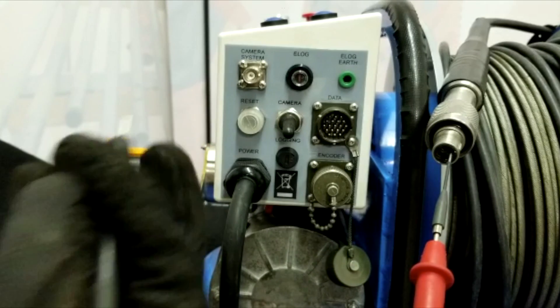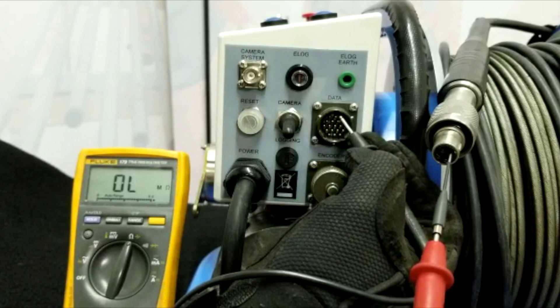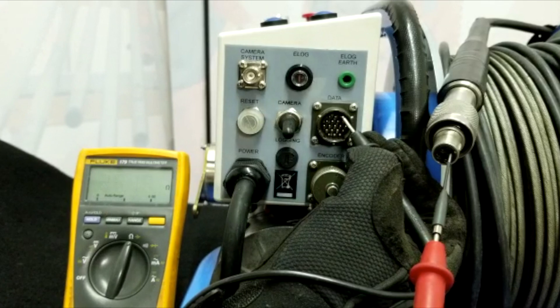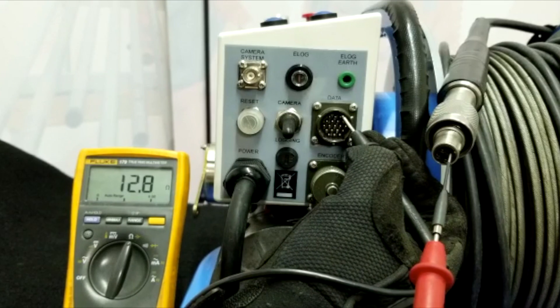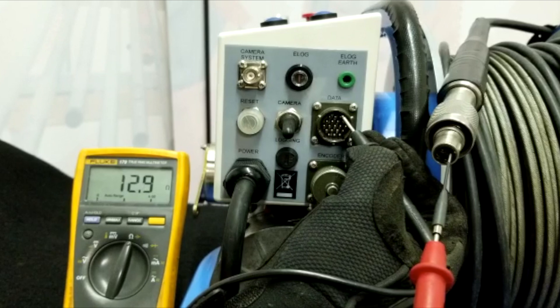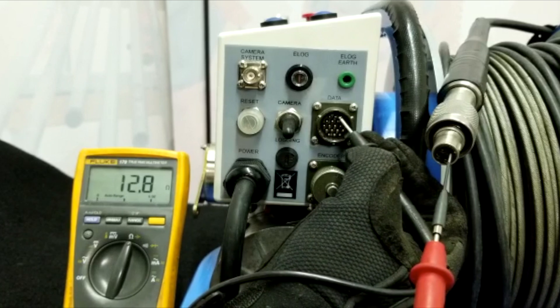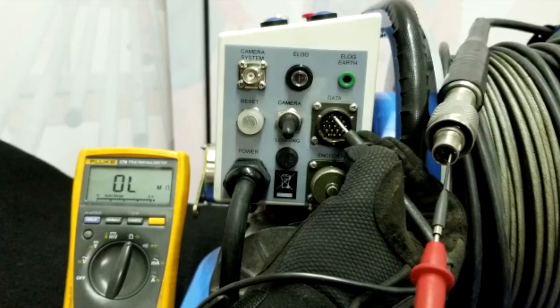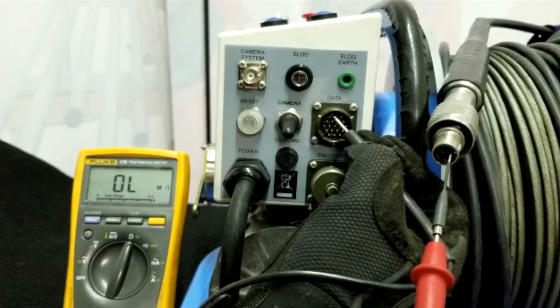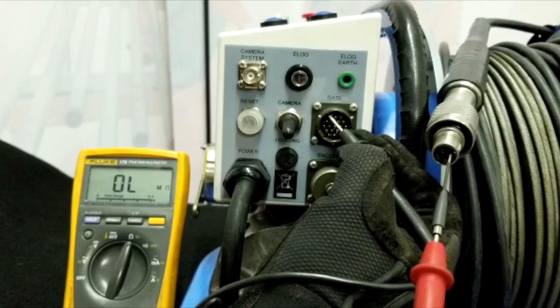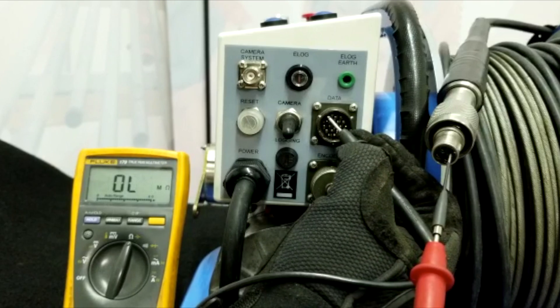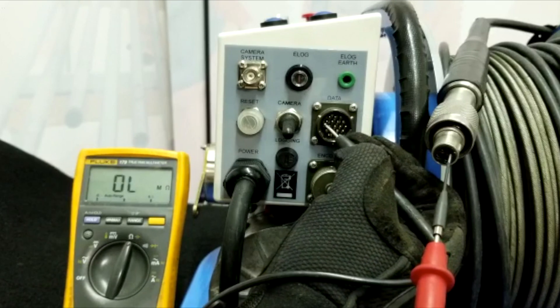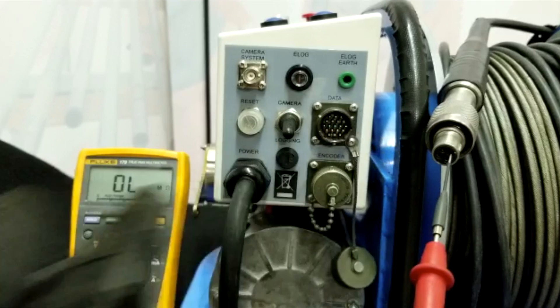And we're gonna check against our pin B as in Bravo. There you go, you see that, 12.98. Alright, and if I check the next one, that's pin A as in Alpha, it's nothing. Pin M as in Mike, we have nothing. Pin L as in Lima, nothing. Pin K as in Kilo, nothing. So good, good, good.